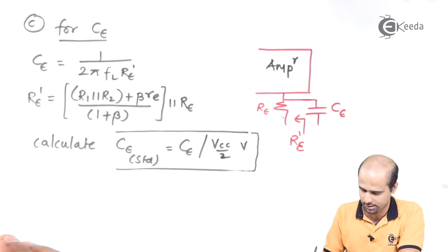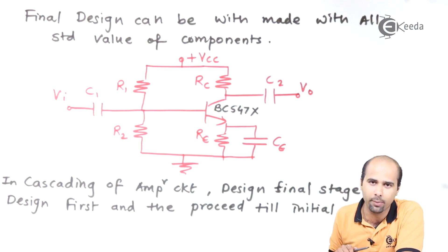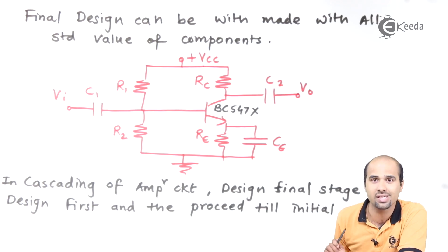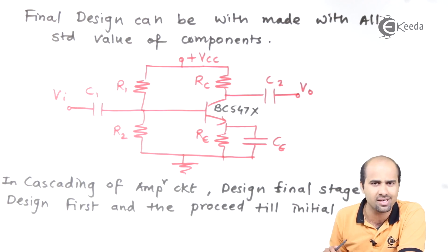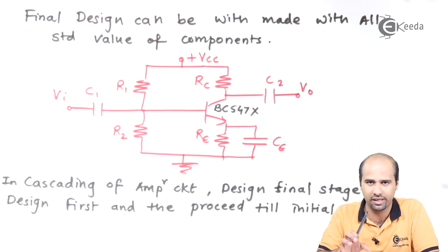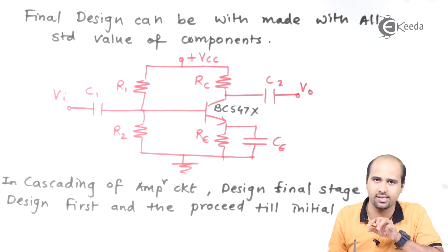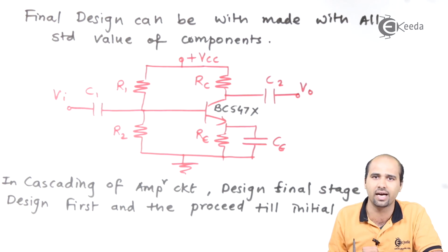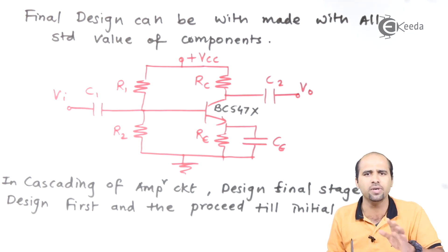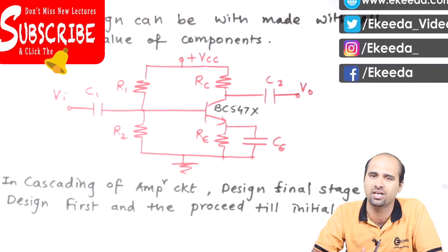Once all parameters are calculated and standardized, we put those values in our initial circuit and the design is complete. For multiple stages of BJTs or FETs, we split the expected total voltage gain into n equal parts. Design the last stage initially — for a three-stage amplifier, design the third stage first, then the second, then the first — considering AV1 equals AV2 equals AV3. This is the simplest way to design a multi-stage amplifier.